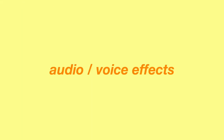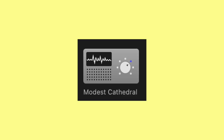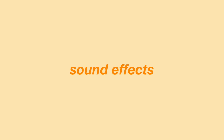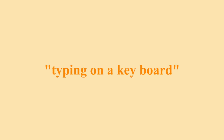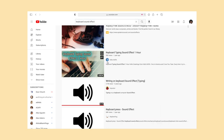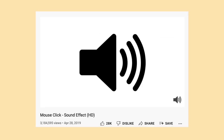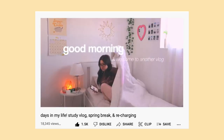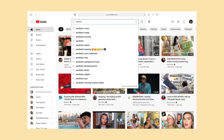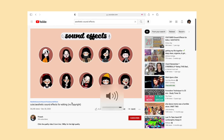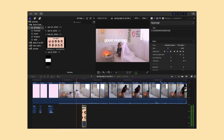I also really like using voice effects like Modest, Cathedral, Telephone, Muffled, and Monster. For sound effects, I use keyboard typing sounds that I found on YouTube — I just searched 'typing on keyboard' and downloaded the audio using YouTube-to-MP3. I did the same with mouse clicks. I also found effects by searching 'aesthetic sound effects' on YouTube — there are tons of free editing packs available.